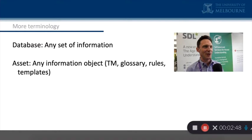There are a few specific terms that might confuse you when the industry is talking about technology. For example, an asset. An asset is anything that you have in your company or project that is going to help you do the translation better. So an asset would obviously be a term base or glossary, a translation memory built up, a set of rules, or a set of stylistic guidelines. Those are all assets — it's just a very general term.